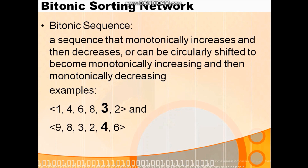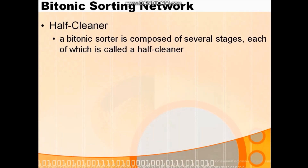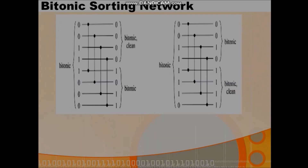The second part of bitonic sorting network is the half cleaner. Whenever we want to implement the bitonic sorting network, the sorting network is built up of two elements: the wire and the comparator. The bitonic sorting network is implemented with the help of the half cleaner.